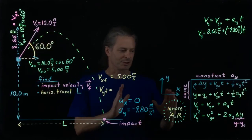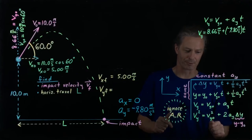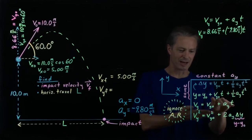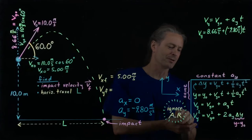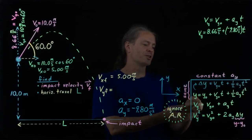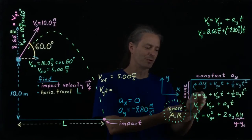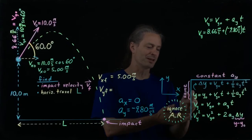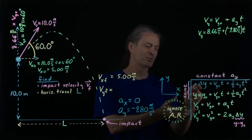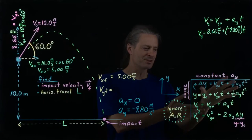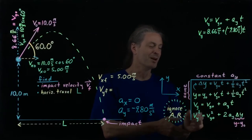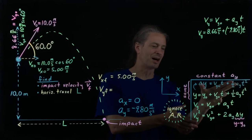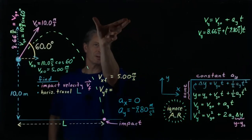Let's look at another equation that has time in it. The displacement equation delta y equals v sub y zero times t plus one-half a sub y times t squared also contains time. I'll use the top form of that equation and put it up here so we can look at it.